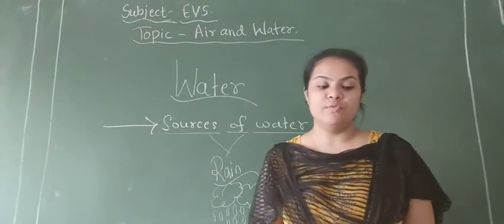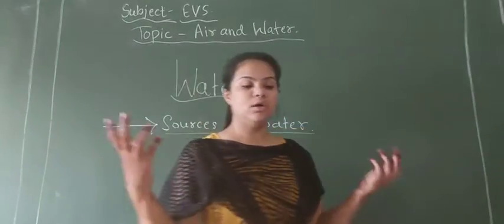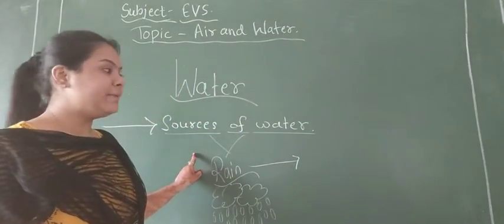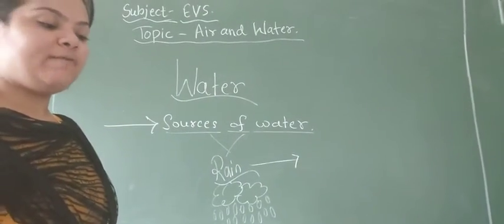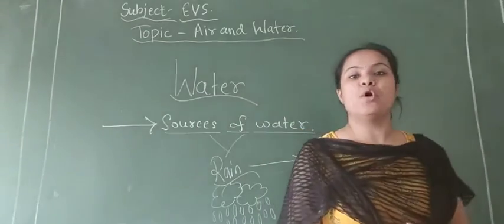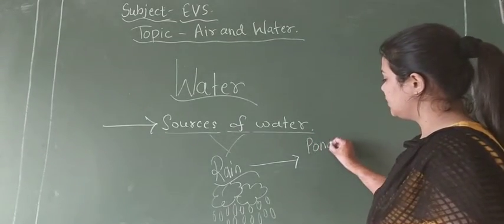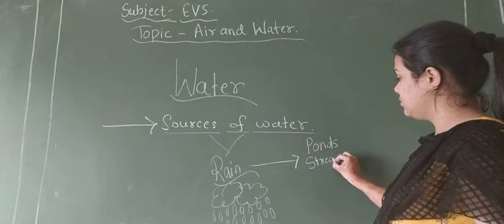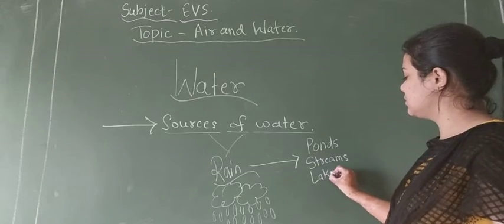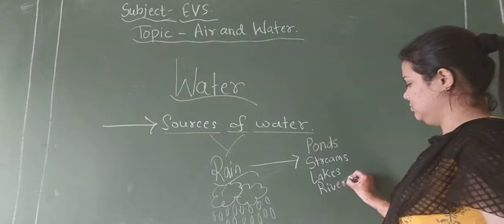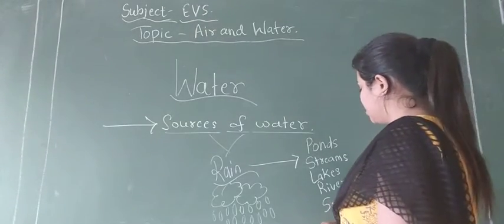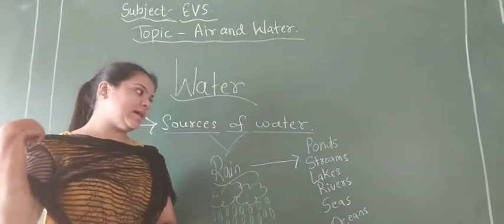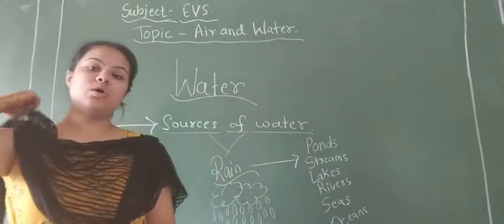Rain water that falls on the ground gets collected in water bodies. That water bodies are ponds, streams, rivers, lakes, seas and oceans. Oceans and seas are the biggest water bodies and ponds, streams, lakes and rivers are some small water bodies.